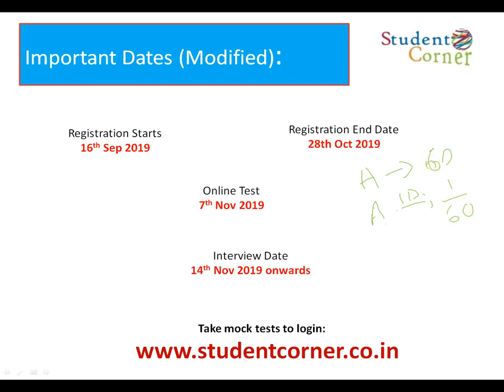This is the only basic thing you need to know: A in 60 days means A in one day does 1/60th part of the work. The whole concept of Time and Work is based on this. Secondly, whenever there is a relation between men and days, it is always M1×D1 = M2×D2, because men and days are always inversely related.